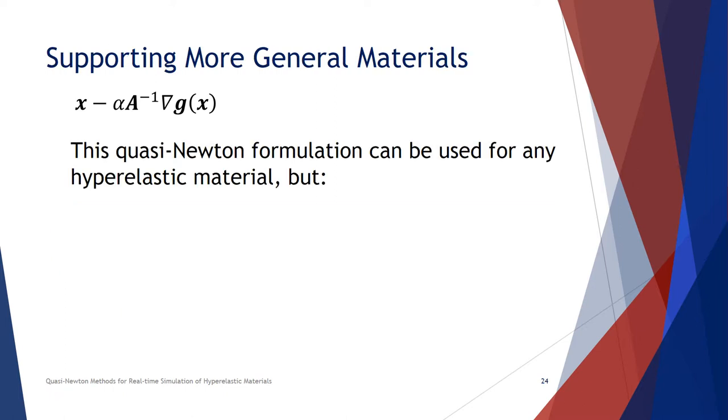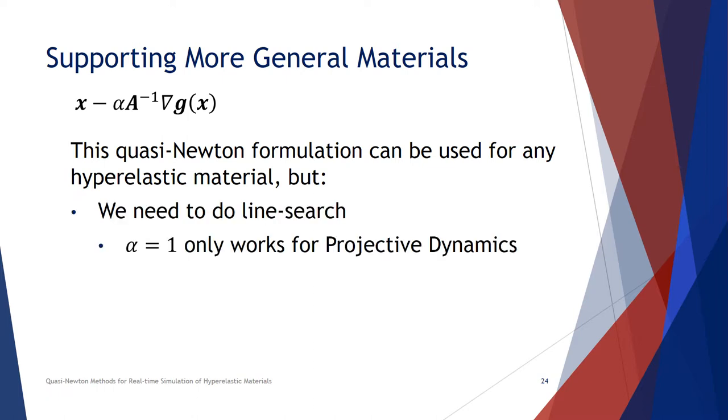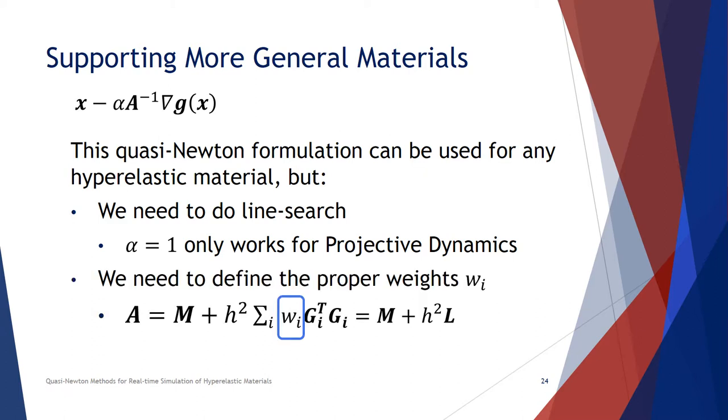This kind of quasi-Newton update can actually be used for any materials. There's no reason for preventing us from using that, because A is a positive definite matrix, -A⁻¹ multiplied by the gradient is guaranteed to be a descent direction. But the catch is, now we need to run a line search to safeguard the quasi-Newton iterations, and we need to define a proper weight for the Laplacian matrix.